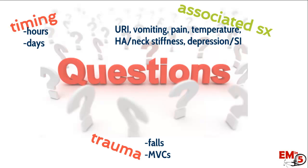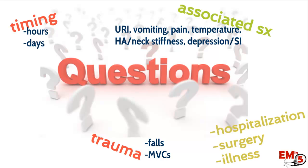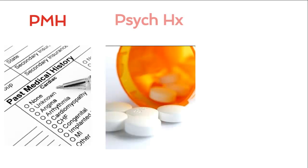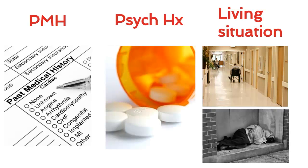Make sure you also ask about trauma — have they had any falls recently or were they involved in a car accident? Asking about recent hospitalizations, surgeries, or recent illness might give you a clue as to what's going on today. Make sure you ask about new medications or changes in dosing, which is especially important with the elderly. Get past medical history and psychiatric history as well, and try to figure out the patient's living situation — do they live in a nursing home, alone, or are they homeless?